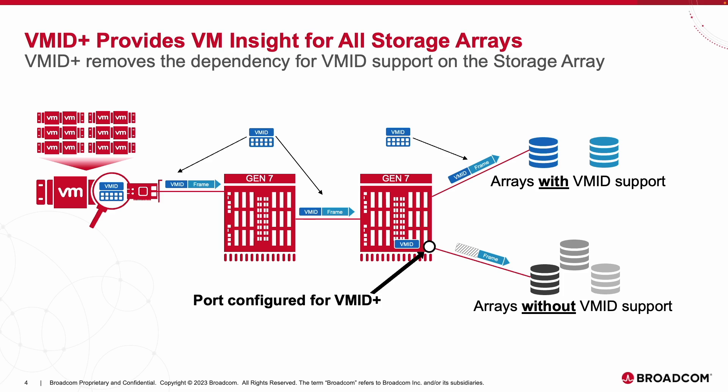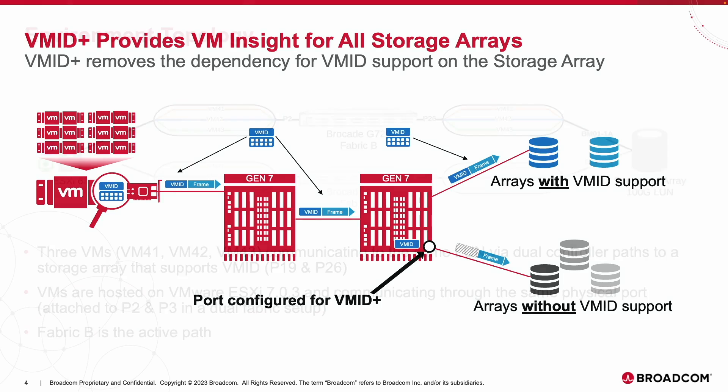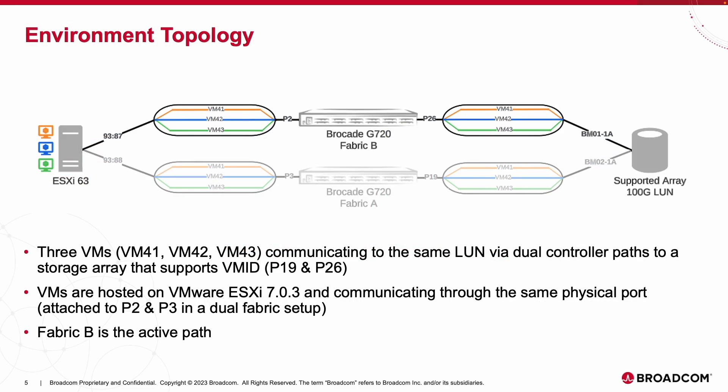As we have a VM Insight demonstration coming up next, let's get familiar with the environment topology we will be working with. On the left-hand side, we have an ESXi server which is hosting three virtual machines: VM 41, 42, and 43. The server has a dual port HBA attached to both Fabrics A and B. On the right-hand side, we have a NetApp storage array also dually connected to Fabrics A and B via both controllers. In addition, we have configured a 100GB LUN that is being shared across all three VMs. Note that Fabric B is currently the active path and that ports 2 and 26 are carrying the combined traffic of all three VMs.